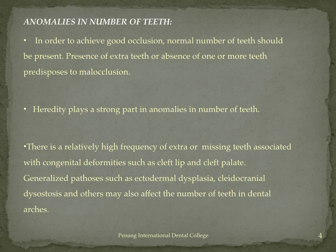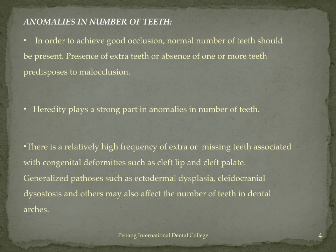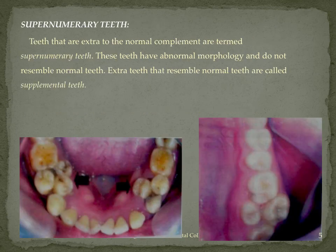Starting with anomalies in the number of teeth: in order to achieve good occlusion, a normal number of teeth should be present. Presence of any extra tooth or absence of one or more teeth predisposes to malocclusion, and heredity plays a very strong part in this. There is relatively higher frequency of extra or missing teeth associated with congenital deformities such as cleft lip and cleft palate. Generalized conditions such as ectodermal dysplasia and cleidocranial dystosis may also affect the number of teeth.